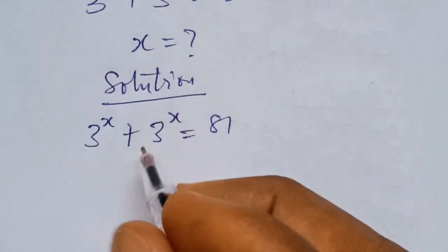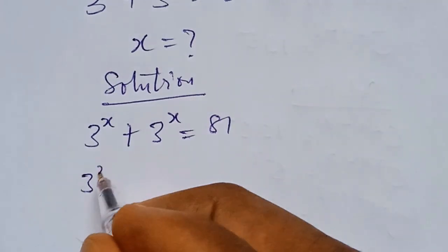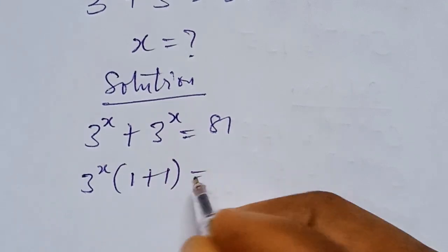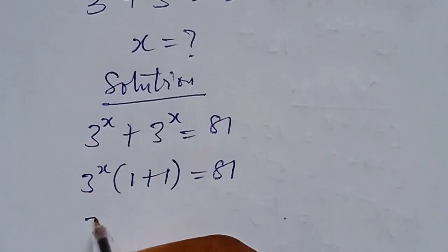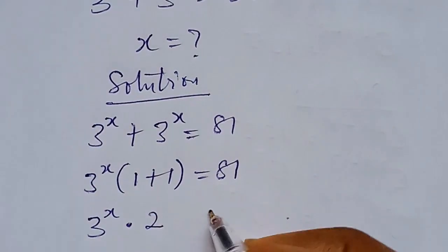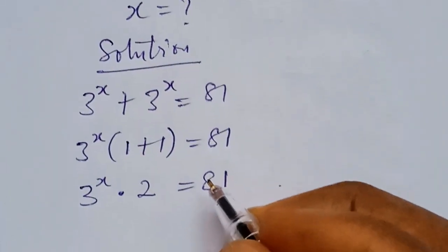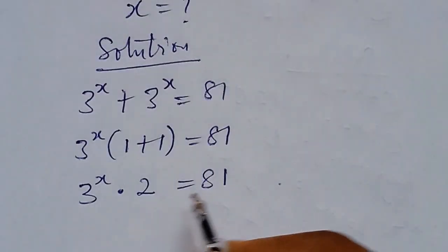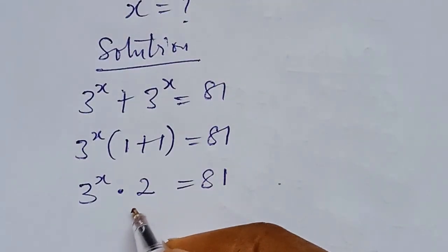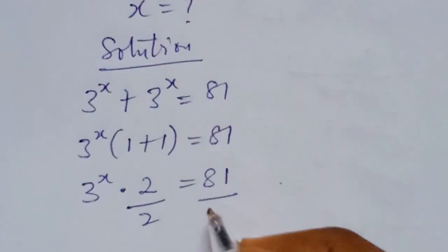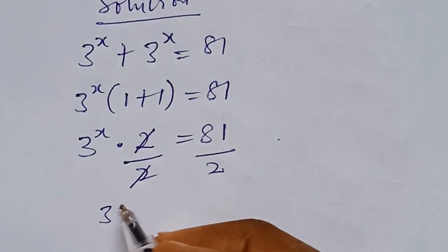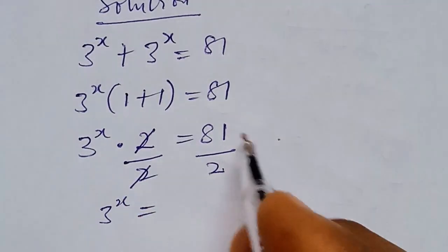So we have 3^x multiplied by the quantity 1 plus 1, which equals 81. This gives us 3^x times 2 equals 81. We then divide both sides by 2 to isolate 3^x on the left-hand side, so 3^x equals 81 over 2.